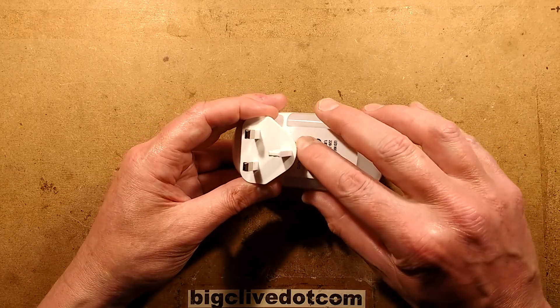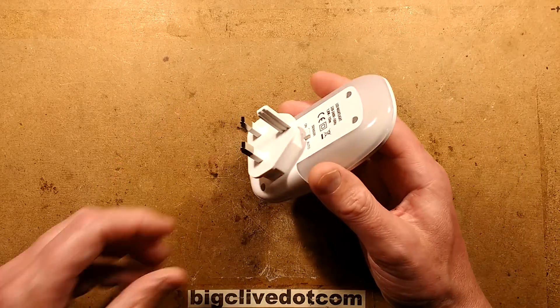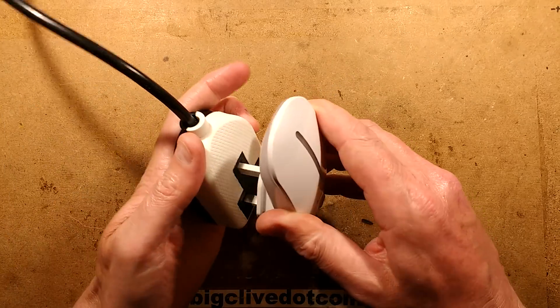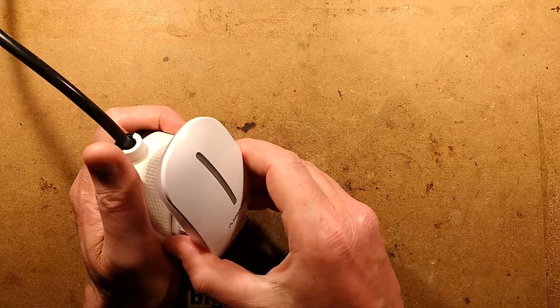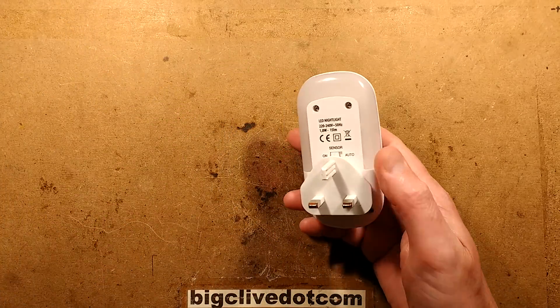Here is your light, let's take a look at it. So it's got two positions, on and auto, and even in the on position plugged in with the light sensor covered over, absolutely nothing happens. I've tried it in a dark room and everything. It is dead.